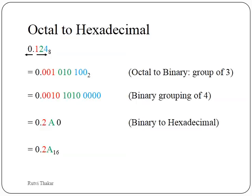Octal to hexadecimal: there is no direct conversion, so we follow two steps — octal to binary by grouping of 3, then binary to hexadecimal by grouping of 4. For the number 0.124: 1 becomes 001, 2 becomes 010, and 4 becomes 100 in binary. Regrouping the binary digits in groups of 4 gives 0010 and 1010 (with trailing zeros). 0010 gives the value 2, and 1010 gives the value A in hexadecimal. Hence 0.124 octal is equivalent to 0.2A in hexadecimal.